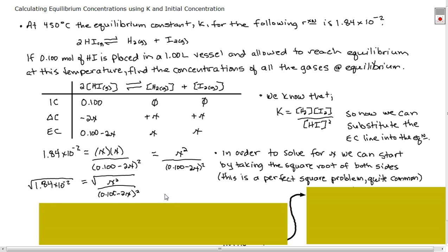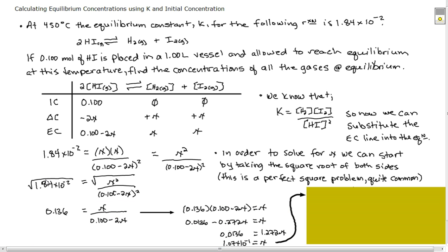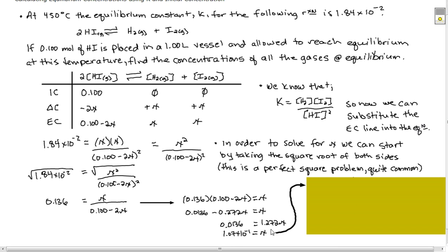So in order to solve for x, we can start by taking the square root of both sides. And this ends up being actually a pretty simple problem to solve. So I square root this side and I get 0.136. And I square root this side and I get x over 0.100 minus 2x. Now I just simply solve for x. And when I solve for x, I'm going to get 1.07 times 10 to the minus 2. That's my x.